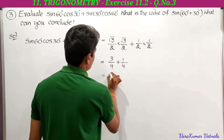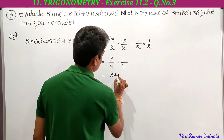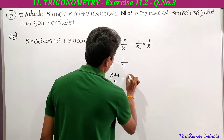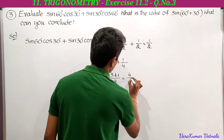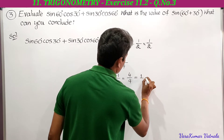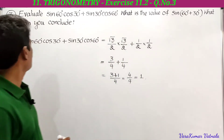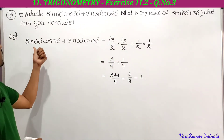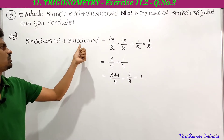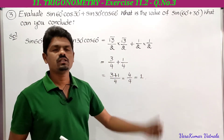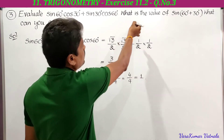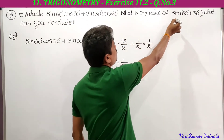Adding the numerators: 3 plus 1 by 4 gives us 4 by 4, and 4 by 4 is equal to 1. So we have found that sine 60 cos 30 plus sine 30 cos 60 is equal to 1.